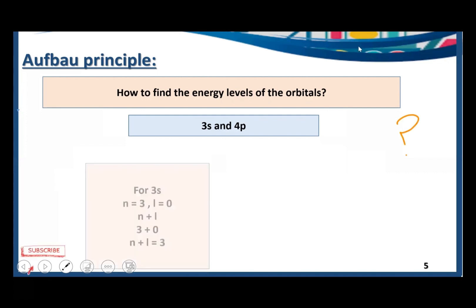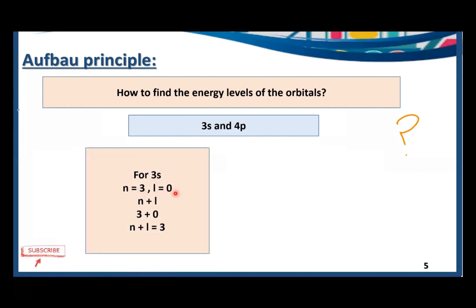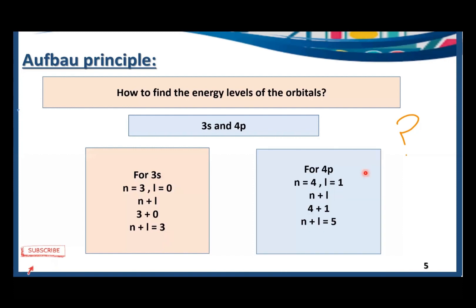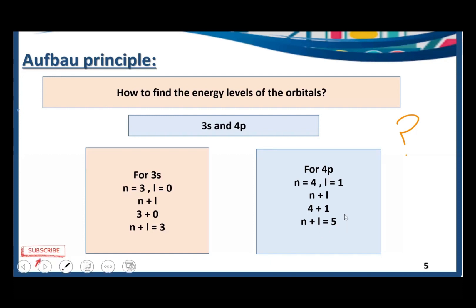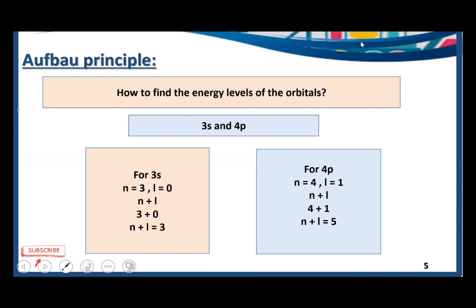For 3s: n=3 and l=0 (since s subshell), so n plus l = 3 plus 0 = 3. For 4p: n=4 and l=1 (since p subshell), so n plus l = 4 plus 1 = 5. Since 3s has a lower n plus l value of 3, it has lower energy, so we fill 3s first. Then we fill 4p, which has the higher n plus l value of 5.